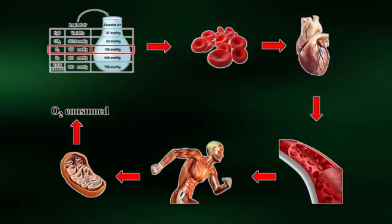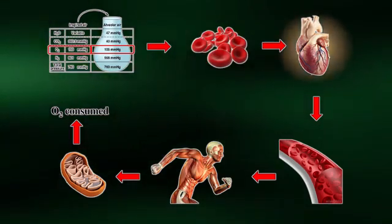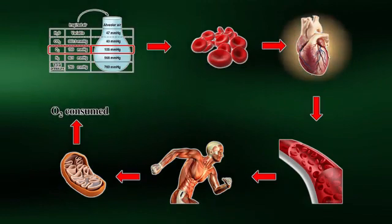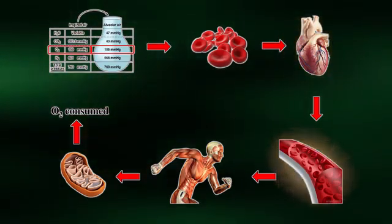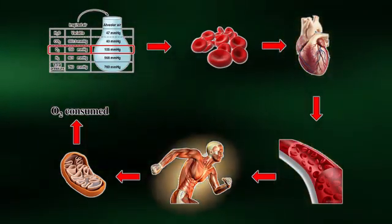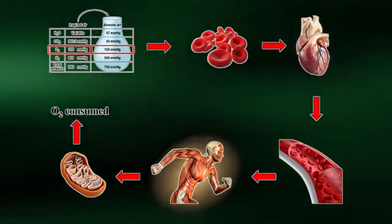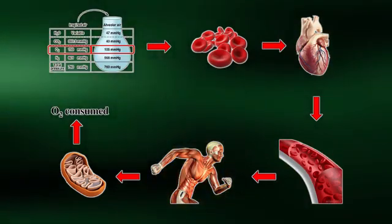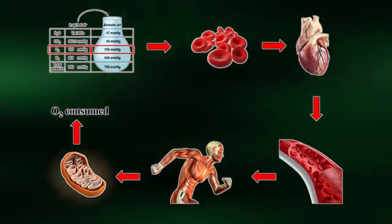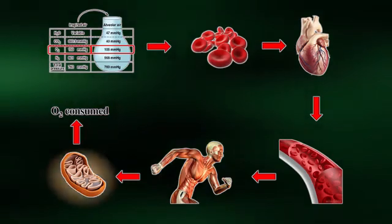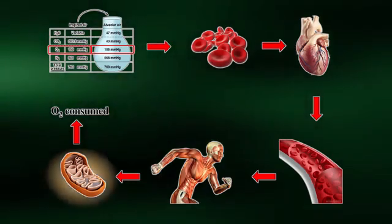From there, the oxygen-rich blood is transported to the heart, where it can be pumped out via blood vessels to the exercising muscles. As covered in a previous video, the oxygen will be consumed in the muscle mitochondria for ATP production.